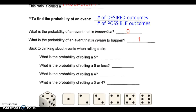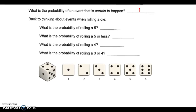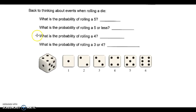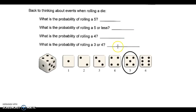Hopefully it'll become more clear as we do more exercises. In order to help us with figuring out probabilities for rolling a die, I have this picture showing the different possible outcomes. It asks for the probability of rolling a five. Rolling a five is the only desired outcome, so there is one desired outcome out of six possible outcomes — that gives us one divided by six.